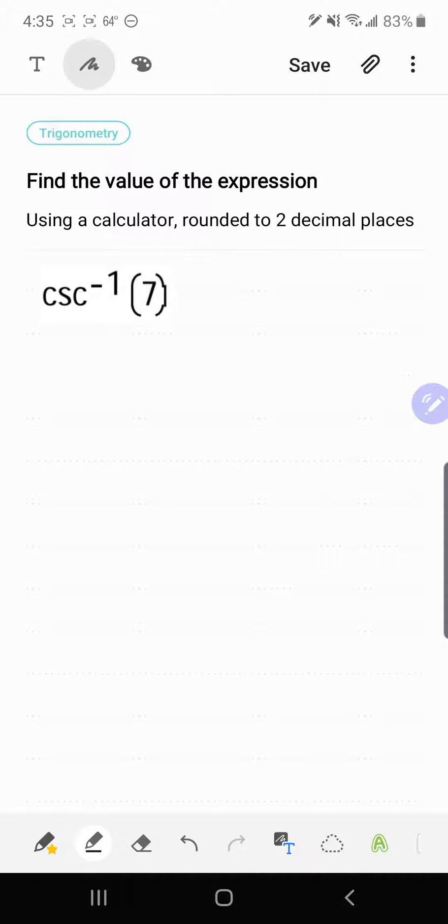All right, in this example we're going to find the value of the expression using a calculator rounded to two decimal places. Here we have the inverse cosecant of 7.